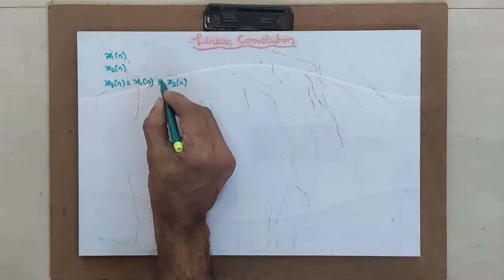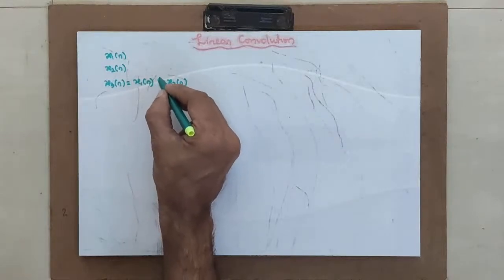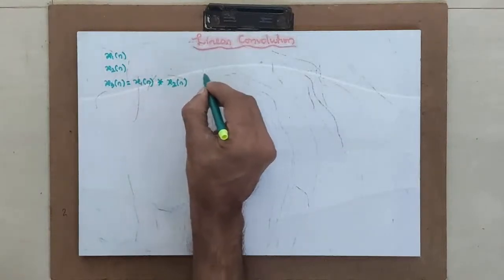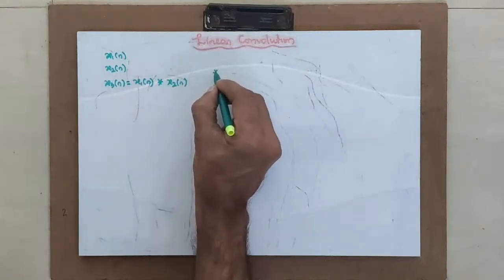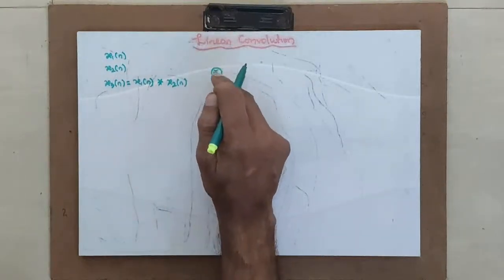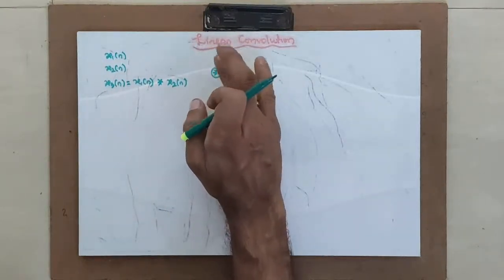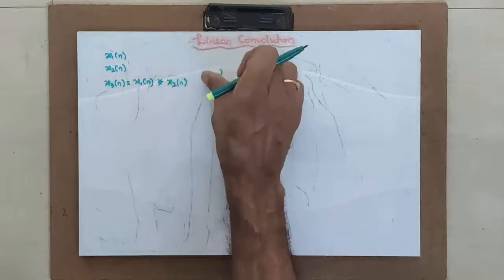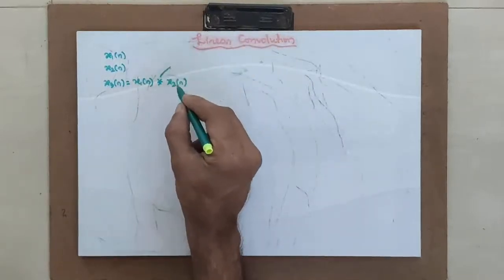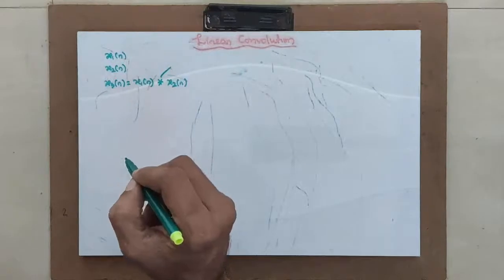Here you can see you are just putting a star, not a circle around that. Circular convolution means you would put a star inside a round circle. That shows that it is a circular convolution. If it is simply a star then it shows that it is a linear convolution.